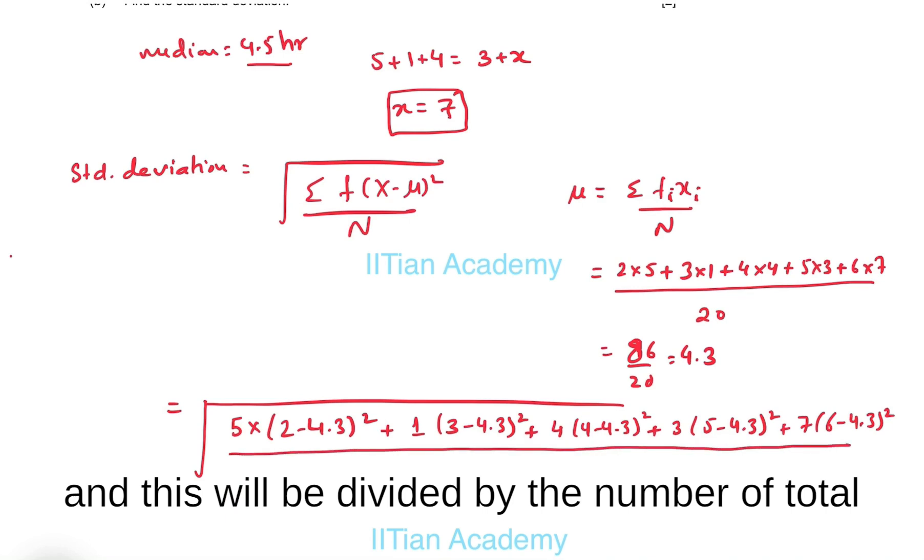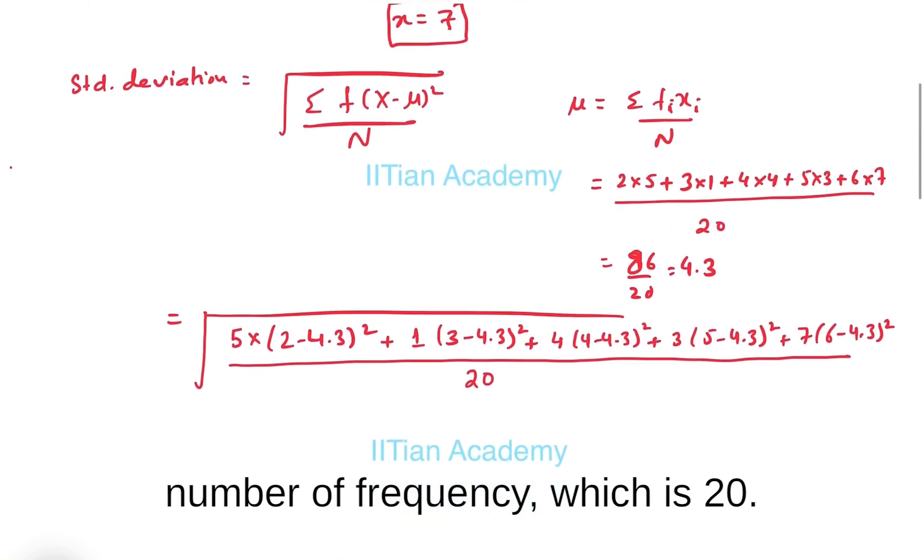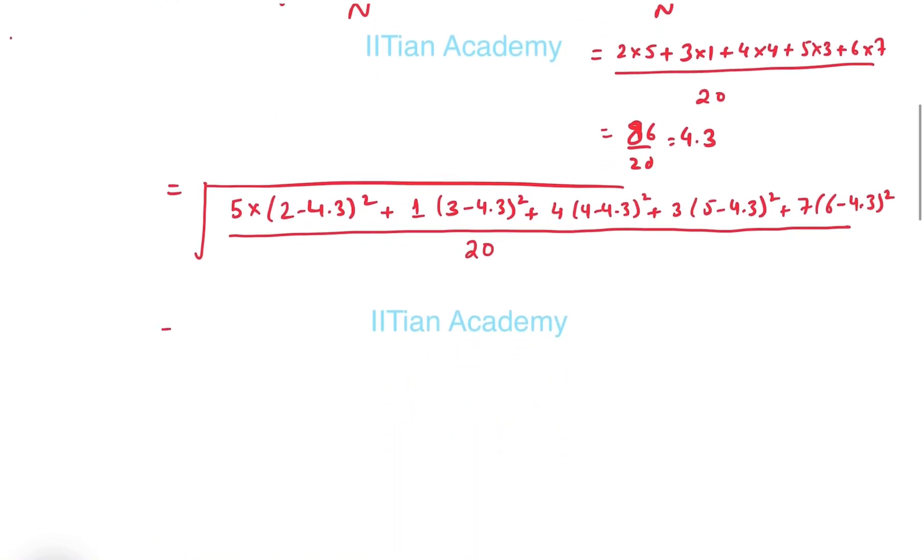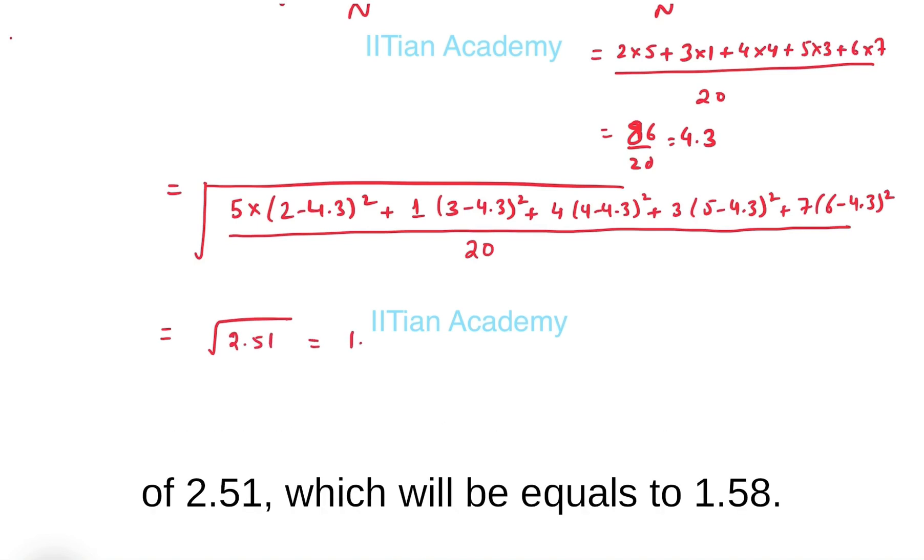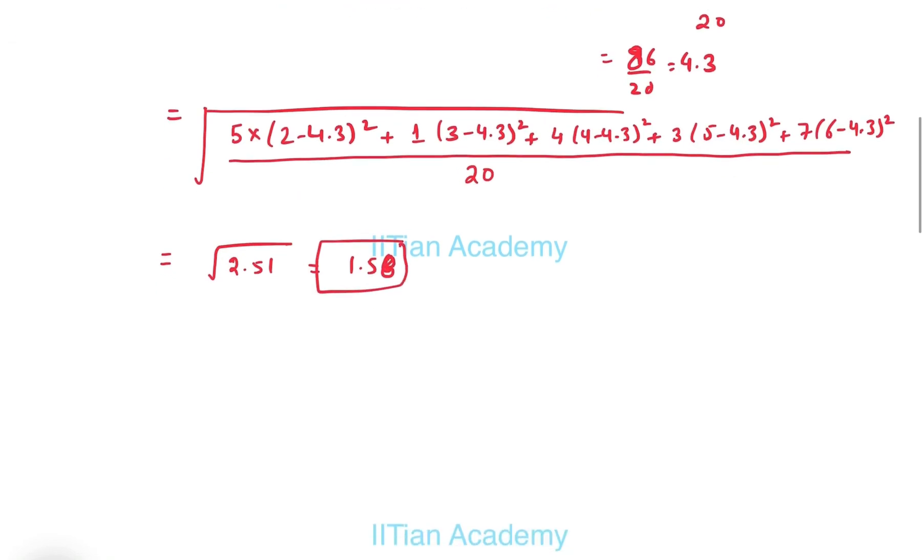Now simplifying this expression we get square root of 2.5, which will equal 1.58. So this is your solution.